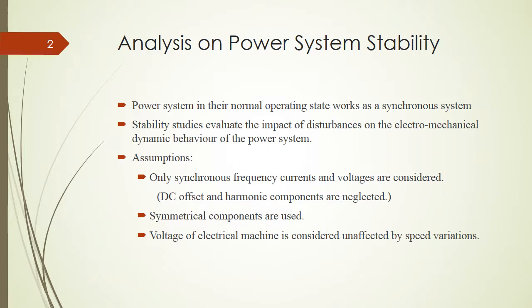Hence, our stability studies need to evaluate the impact of those disturbances on the electromechanical dynamic behavior of the power system. To be able to do that, we need to simplify our system by making assumptions. There are three major assumptions: first, only synchronous frequency currents, voltages are considered, so DC offset and harmonic components are neglected. Second, only symmetrical components are used. Third, voltage of electrical machines is considered unaffected by speed variation, so during our analysis we assume that it stays constant.